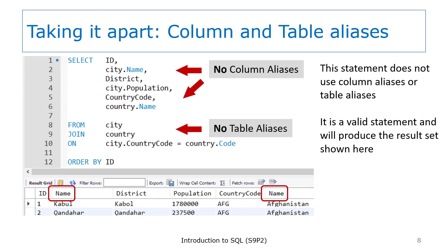This variation shows what happens when you have no table and no column aliases. When you do not have table alias values, you can still table qualify column names — it's just that you will need to specify the full table name. For example, in the column list, the first name column and the population column are table qualified with the city table name. The second name column is qualified with the country table name. The ON clause also uses the table qualifiers, although if the column name only appears in one table, it does not need to be table qualified.